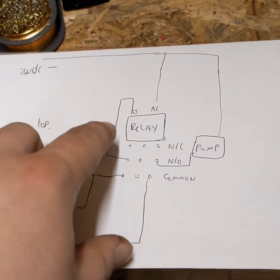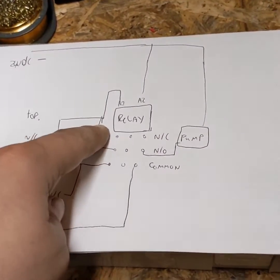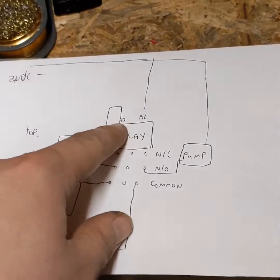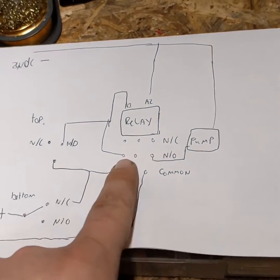the switch will click over to the normally open, which will go to the relay, which will split off into two. So it will engage the relay, but then when the relay is engaged, it will engage a contact here.